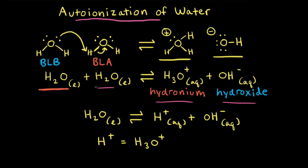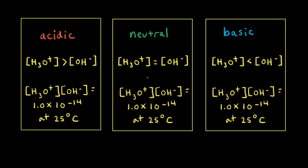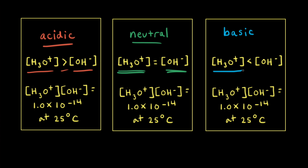Instead of using two water molecules, we can also show autoionization using one: H2O breaks up to form H+ and OH-. H+ is sometimes used interchangeably with H3O+. Pure water has equal concentrations of hydrogen ions and hydroxide ions, so it is a neutral substance. Any aqueous solution where [H+] equals [OH-] is neutral. If [H3O+] is greater than [OH-], the solution is acidic; if [H3O+] is less than [OH-], the solution is basic.